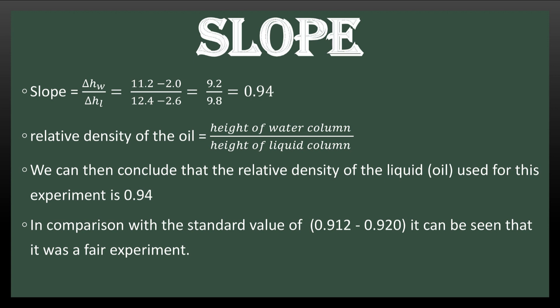We can compare this value with the standard value of vegetable oils. The standard value is about 0.912 to 0.920, but mine is 0.94 — slightly outside of range for the standard value, but just about close. This can be attributed to experimental errors and other factors. The experiment was quite fair because the figures are close. We can conclude that the relative density of the vegetable oil used in this experiment is 0.94.